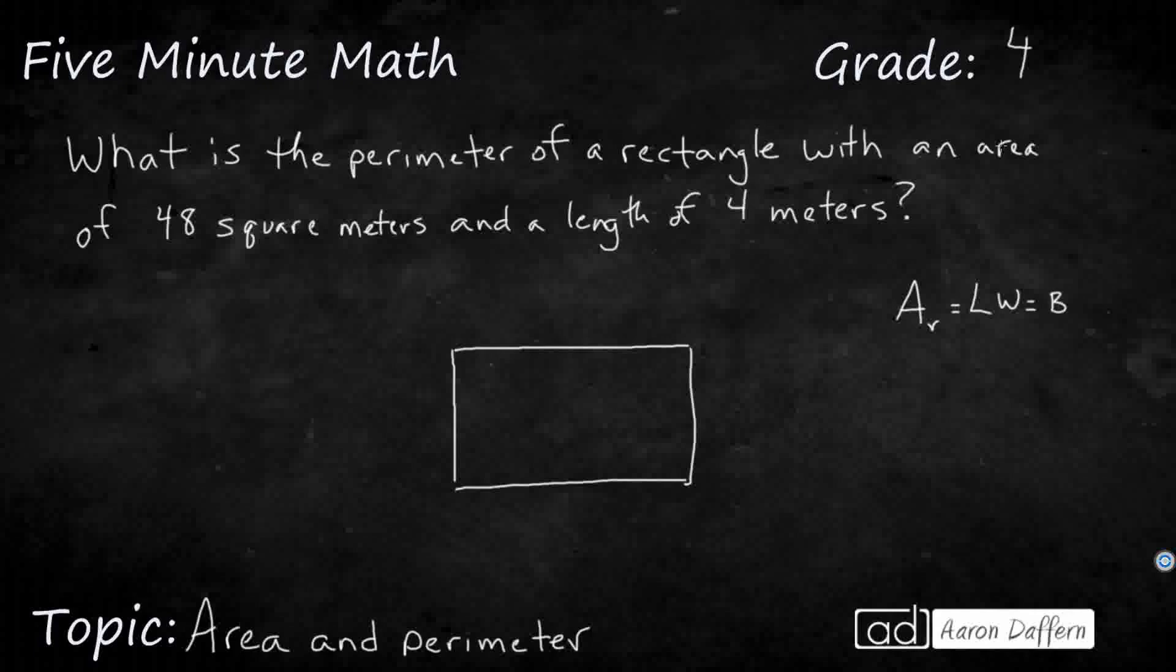Typically, we'll do a capital B, lowercase h, not sure why. But length times width, base times height, same thing. One side times the other side, as long as they're the two sides that are different lengths.